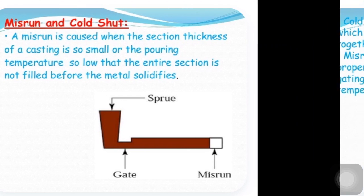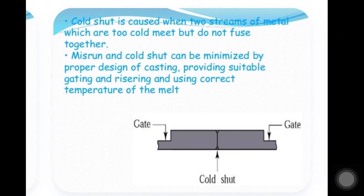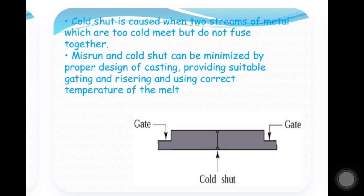That is the condition of the misrun. Now the second defect is cold shuts. A cold shut is caused when two streams of metal which are too cold to meet do not fuse together. When two metal streams come from two gates and do not fuse with each other, the defect generated in that condition is called a cold shut.